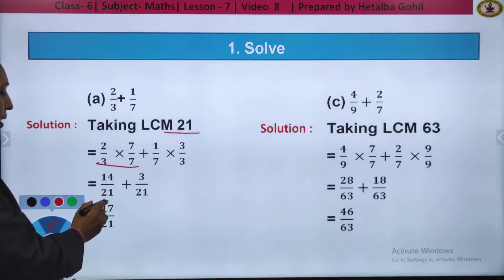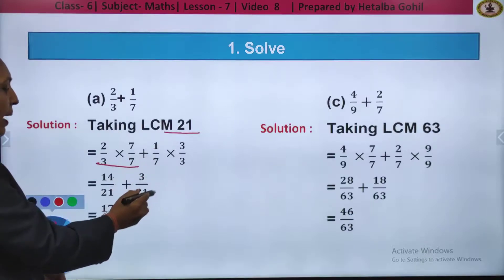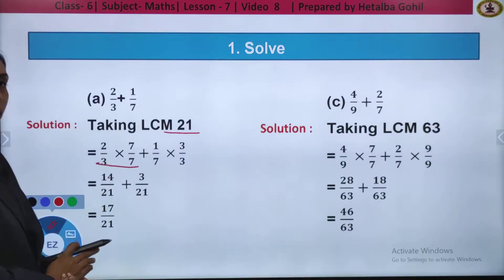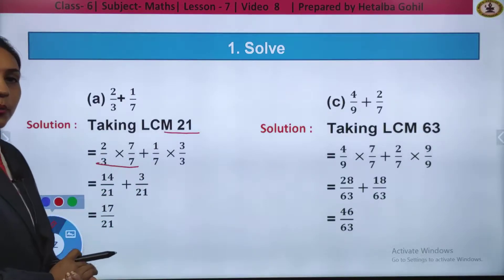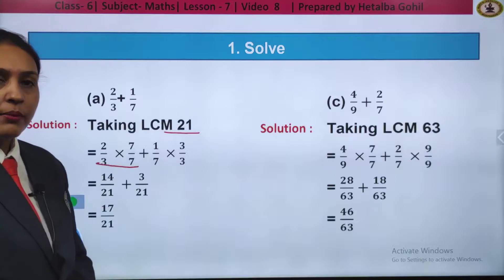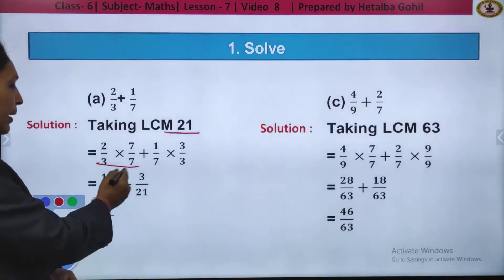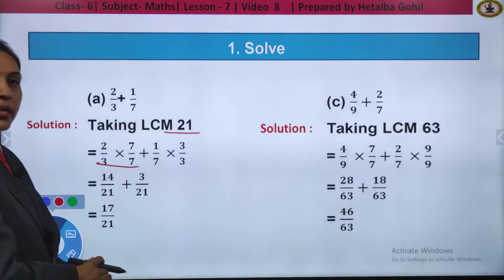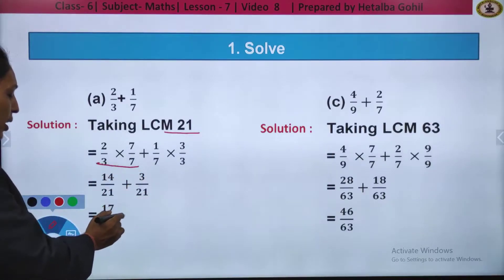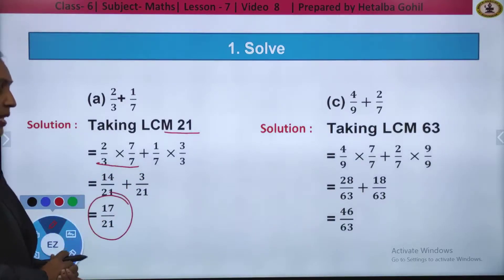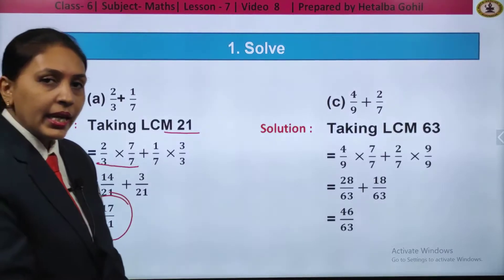When you multiply, 2 sevens are 14 by 21 plus 3 by 21. Now you can see the denominators have become the same — they are like fractions. So you can add the numerators: 14 plus 3, you will get your answer as 17 upon 21.